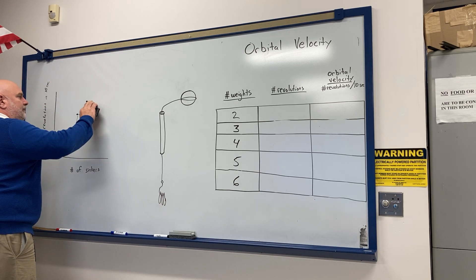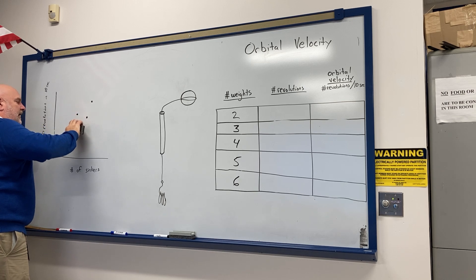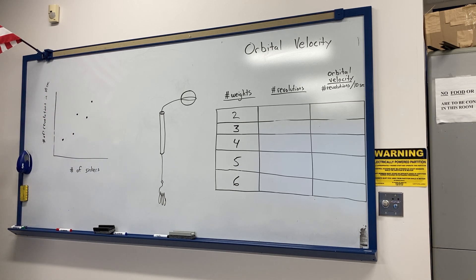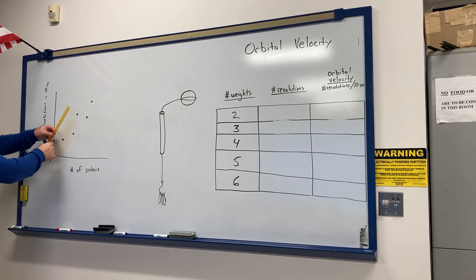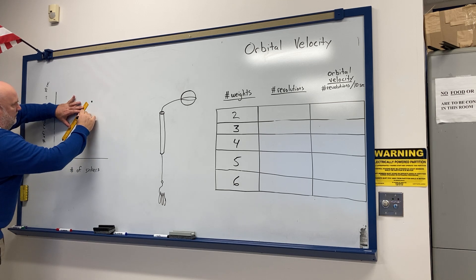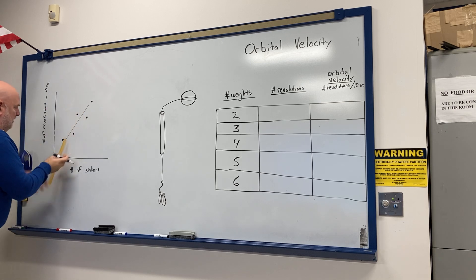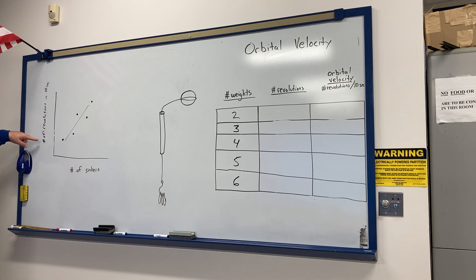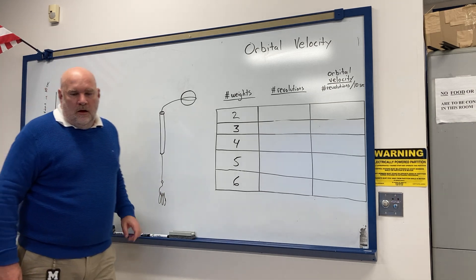To better show the relationship, you're going to draw a best fit line. Plot your data points and then take a straight edge down the middle of your data to show the overall trend. With the best fit line, you can see that as the number of sinkers increases — which represents the force of gravity — the number of revolutions also increases. That shows a direct relationship between gravitational force and orbital velocity.